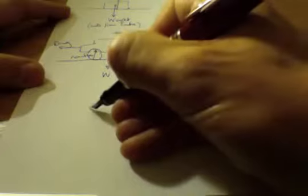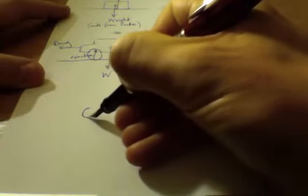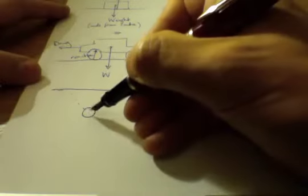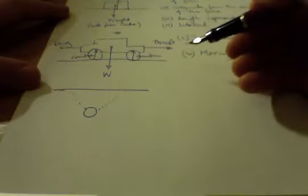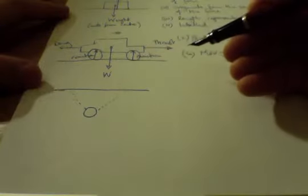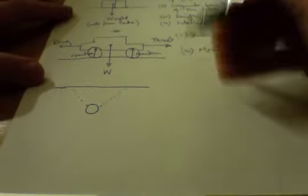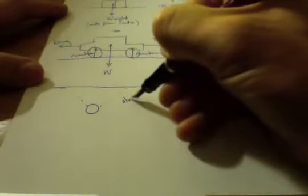What about an object hanging two bits of string? It obviously has weight, this object does. So can we draw the free body diagram for this? If you think you can, hit pause, otherwise here comes the answer.